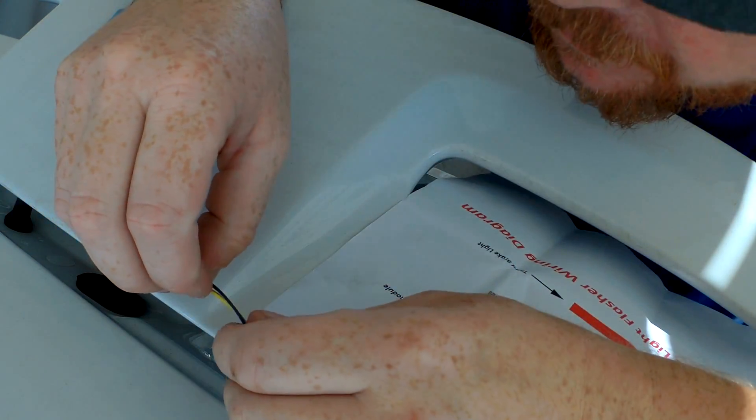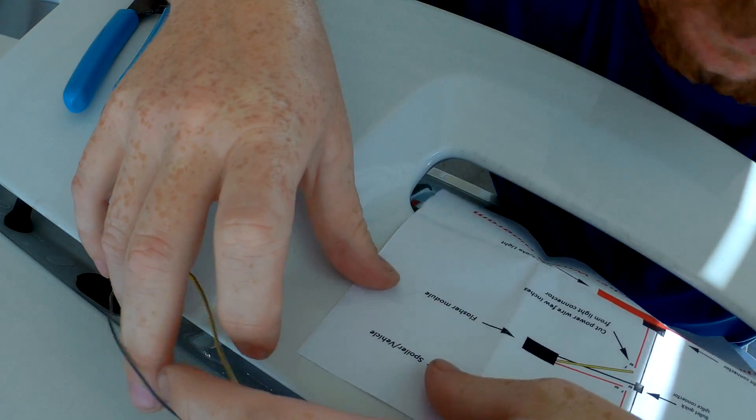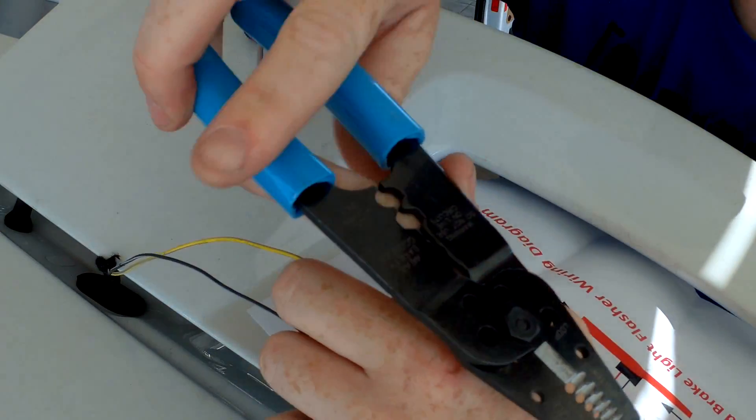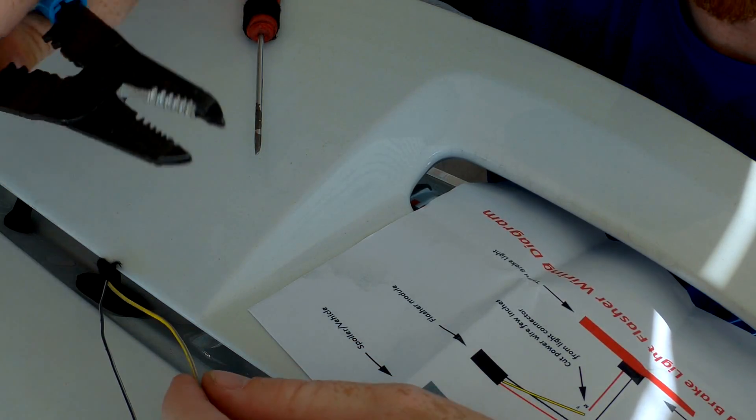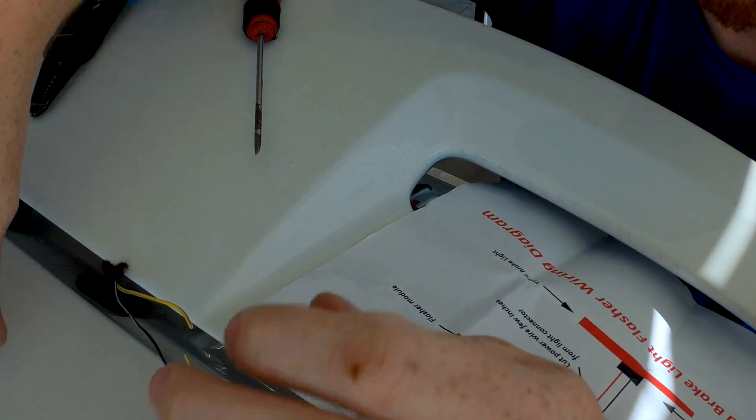It looks like gray to me. Yeah, it's definitely gray, yellow and gray. It should be black and white for the ground. So we're only going to cut our positive wire here, a few inches back to give us room. We've cut it. Now my brake light doesn't work. Awesome.